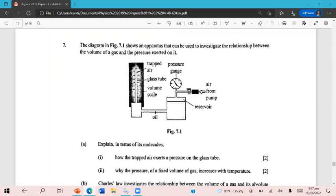This is the final question, question 7 from section B of paper 3, and this is the year 2019. It says the diagram in figure 7.1 shows an apparatus that can be used to investigate the relationship between the volume of a gas and the pressure exerted on it.